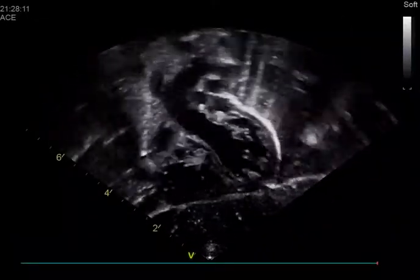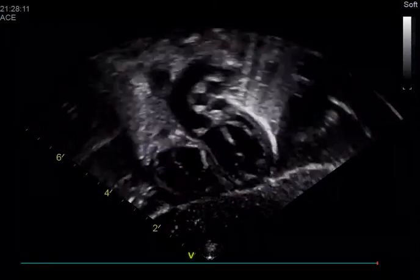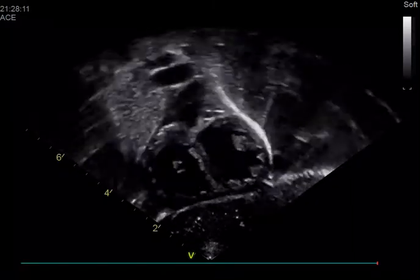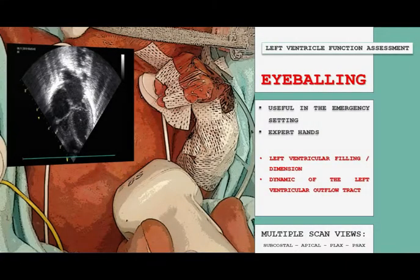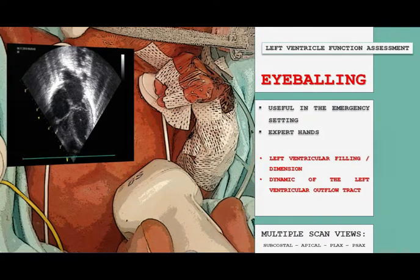Although the evaluation of cardiac function and hemodynamics in sick children by physical examination are unreliable, clear benefits have been demonstrated from integration of clinical assessment with bedside echocardiography. A qualitative assessment of left ventricular contractility can be quickly performed by eyeballing by an experienced physician, especially in emergencies, providing useful information on the level of filling and performance of the left ventricle. It is important to use several windows to evaluate the left ventricle, as no single view can provide a complete picture of contractility.